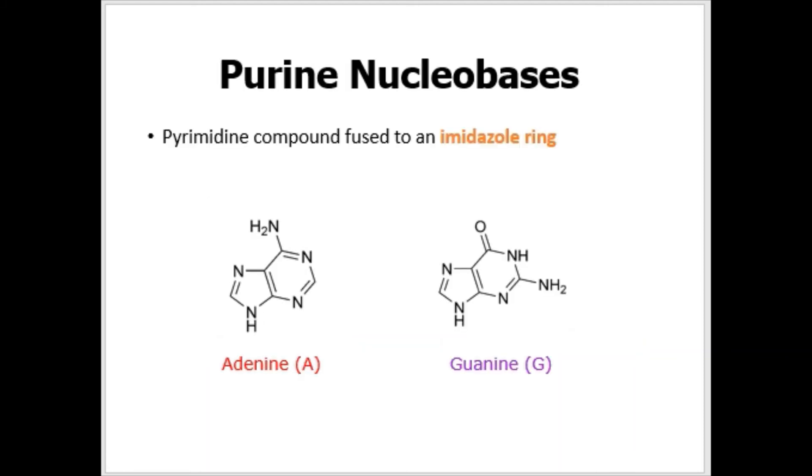We also have purine nucleobases and they look a bit more complicated. They consist of a pyrimidine ring that's fused to something called an imidazole ring, basically a double cyclic molecule. In this case we have two different ones: one is adenine, A, and the other one is guanine or G. They have slightly different structures but the basic chemical structure is the same.